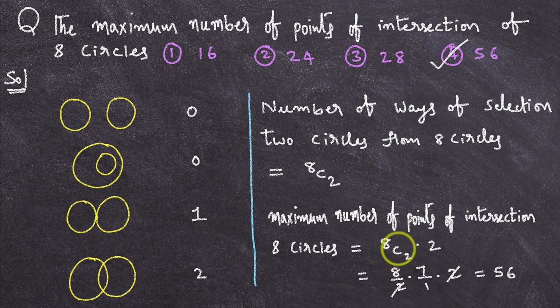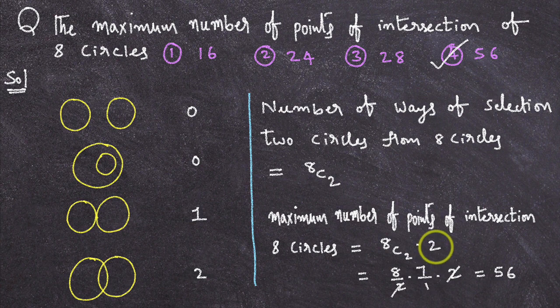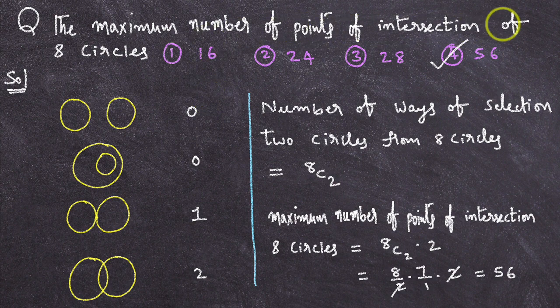8C2 is 28. 28 into 2. 28 ways you can select a pair of circles and each pair will give you 2 points of intersection. So, maximum number of points of intersection of 8 circles is 56.